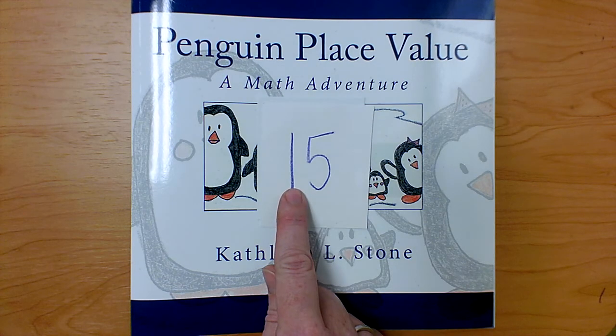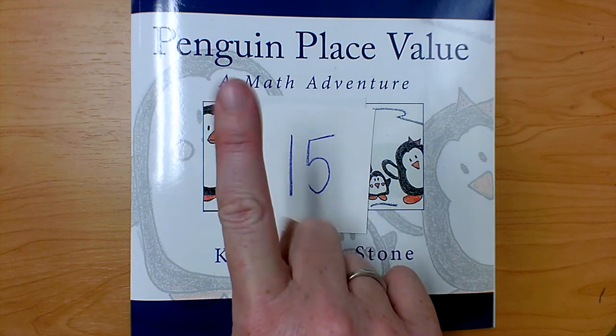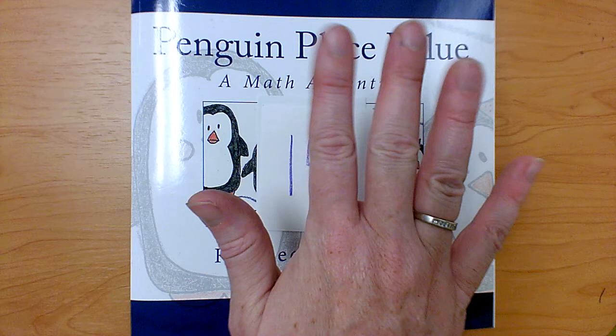This one is worth ten. It's a group of ten. This five is worth five ones. One, two, three, four, five.